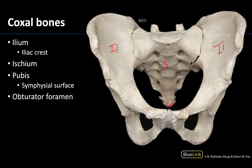The ischium is going to be the more posterior inferior portion — we'll see a better view of the ischium in another image, not quite as visible here as in a posterior or lateral view. The pubis are your smallest portions, more anteriorly placed, and those two pubic bones articulate at the pubic symphysis. These very edges of the bones are the symphyseal surfaces of the pubic bones.